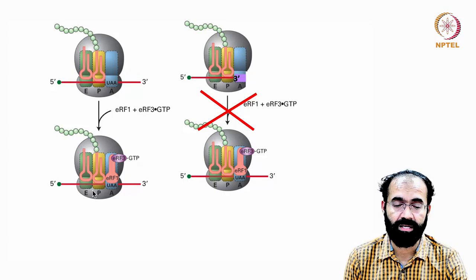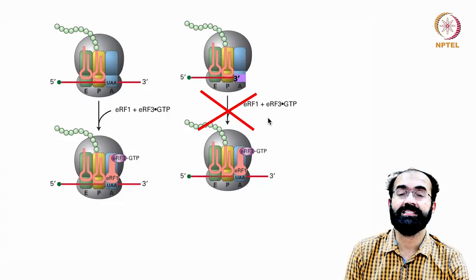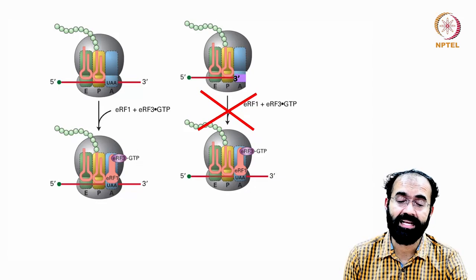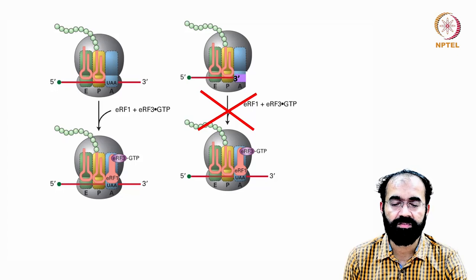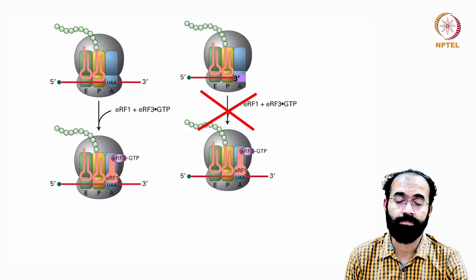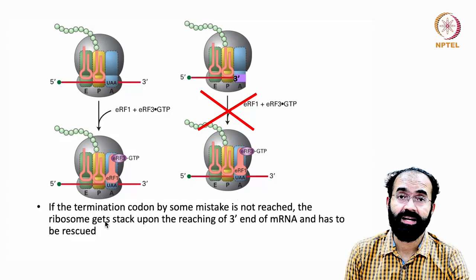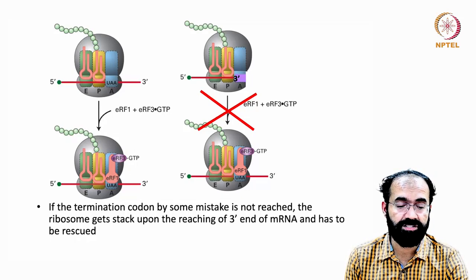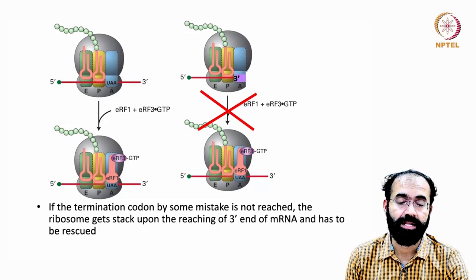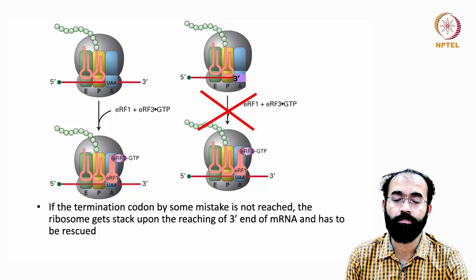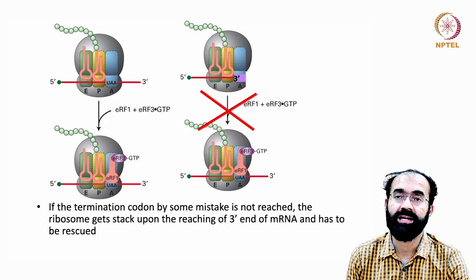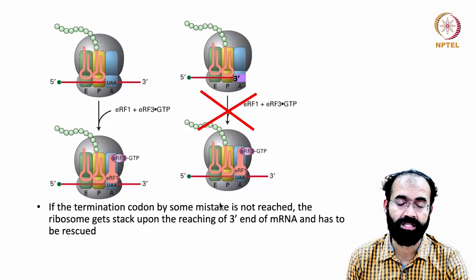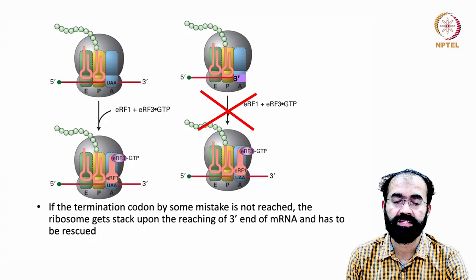However, if termination doesn't happen — because it is a premature stop codon, an unwanted stop codon, or there is no stop codon and the ribosome reaches the 3' end — then eRF1 and eRF3 do not come, because there is no stop codon available for them to recognize. The ribosome gets stuck at the 3' end of the mRNA with a peptide still attached, and there is no codon for the release factors to occupy.